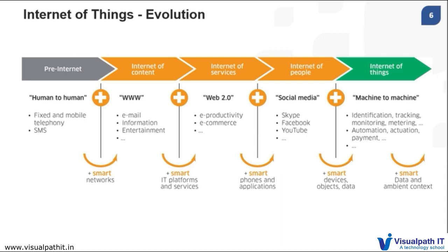Moving forward, with the help of the Internet, we started using social media to communicate with people such as Skype, Facebook, and YouTube. So here, we were communicating over the Internet, but only people were communicating with other people. After that, smart devices came — such as smartphones and smart objects — which help us to interact devices with other devices over the Internet.